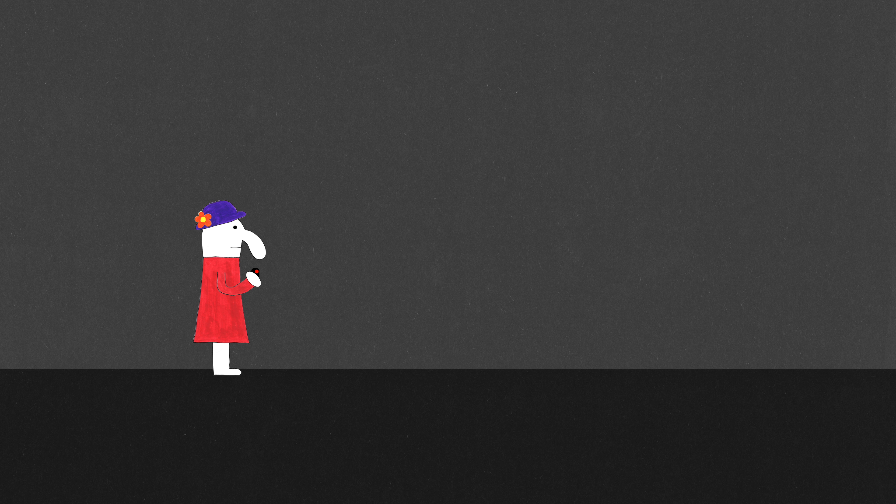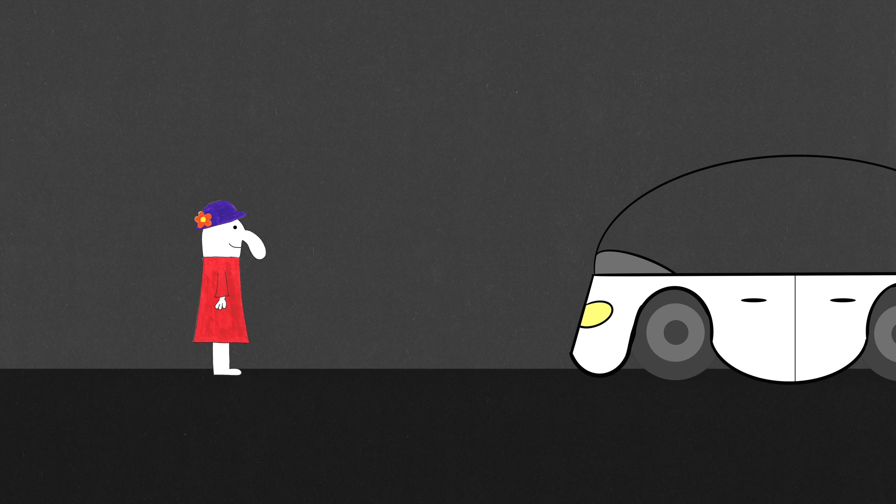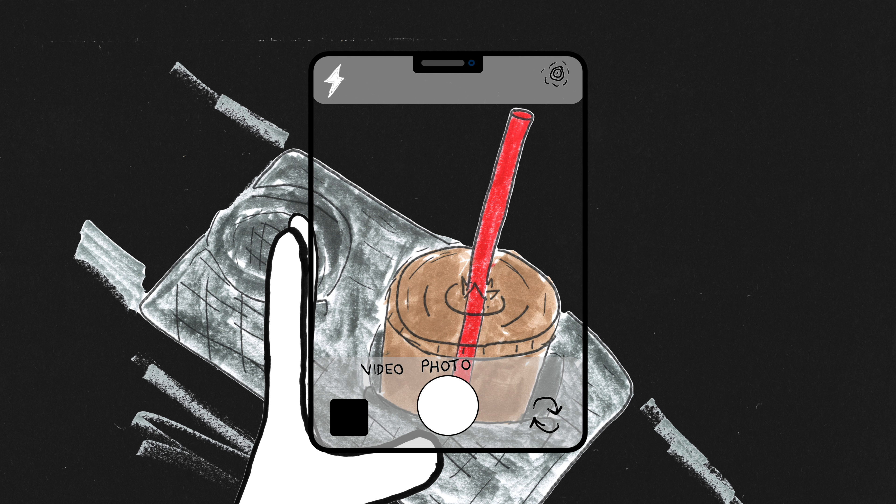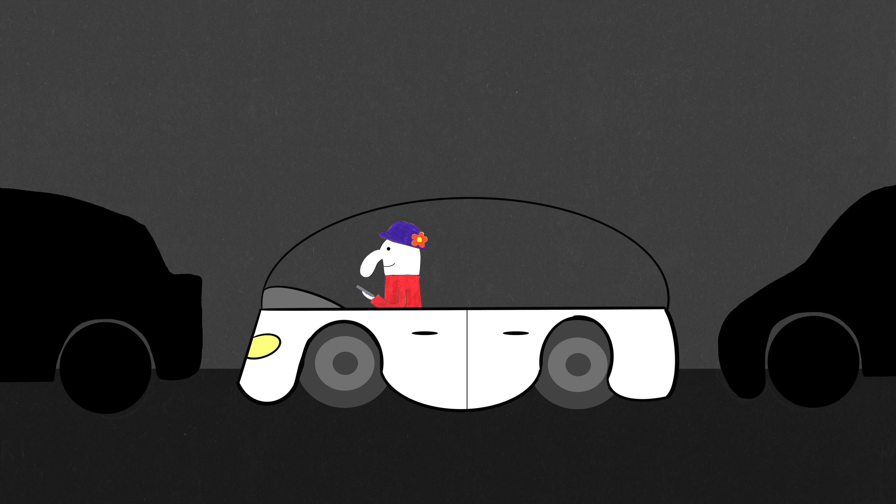Rosemary does not like to drive, so she buys herself a self-driving car. All she really does in it is go get coffee. Rosemary loves coffee. Rosemary is so happy she no longer has to pay attention to the road.